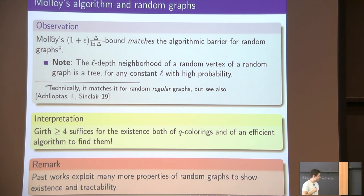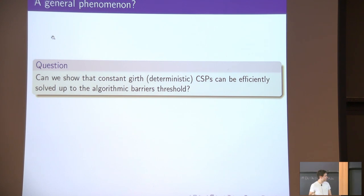This is quite remarkable, especially on a technical level because our previous works used many more properties of random graphs to show the same thing. So, this question I care about, and I would like to explore, is: is this a general phenomenon? Is it true that for any deterministic family of constraint satisfaction problems that has constant girth, can it be solved efficiently up to the corresponding algorithmic barrier threshold for random CSPs? Can we generalize Molloy's results from the q-coloring problem to every constraint satisfaction problem of interest?